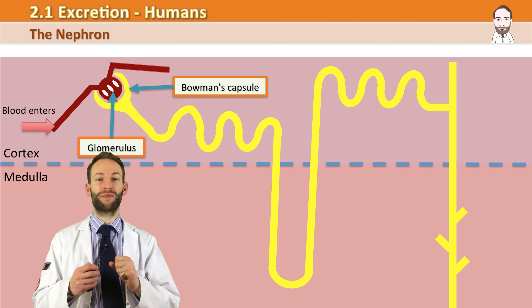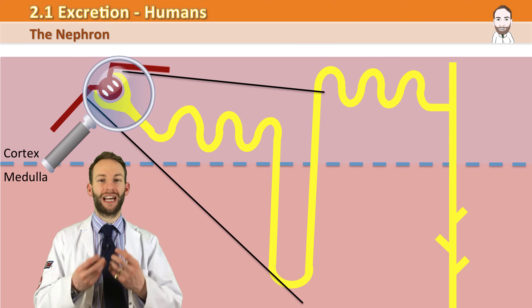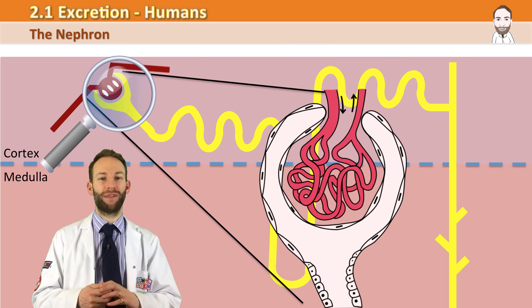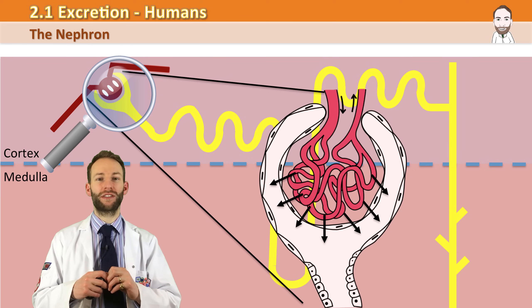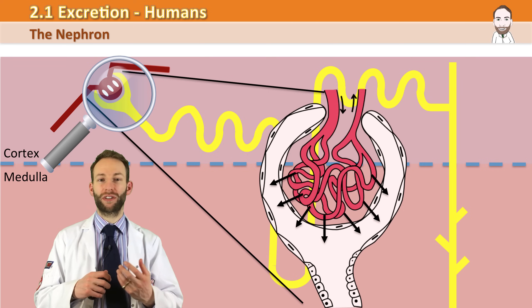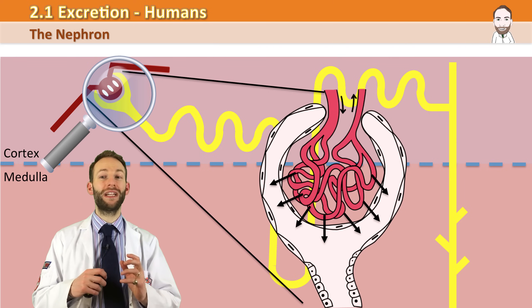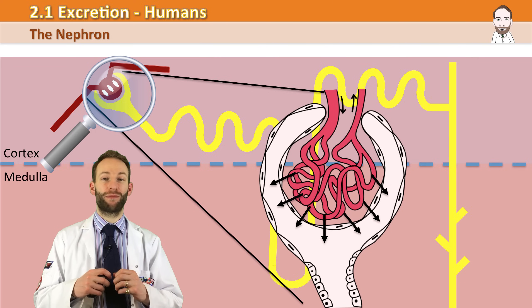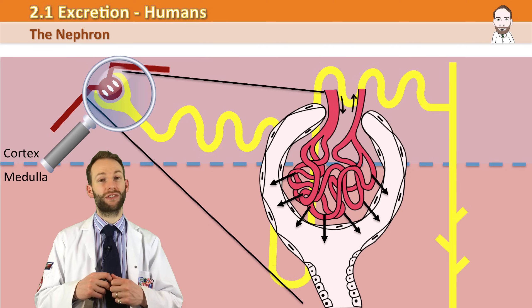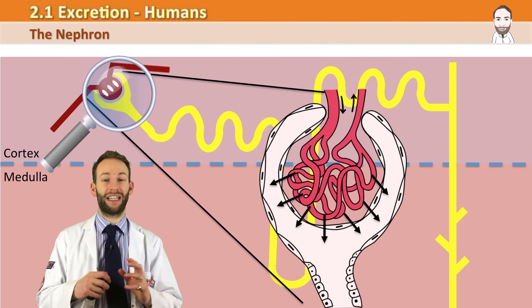Because the blood is under such high pressure, lots of stuff starts getting forced out of the blood and is collected in the Bowman's capsule. All of the small parts of the blood are included: most of the fluid, all the products of digestion dissolved in the plasma — like glucose, amino acids, water, fats, ions, and urea — get forced out. All that's really left in the blood at this point are the blood cells — red and white — and large proteins that are too big to fit through the capillary.